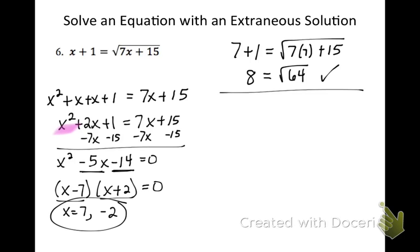Whenever I plug negative 2 in, I get negative 2 plus 1 equals the square root of 7 times negative 2 plus 15. So the problem here is this negative 2 plus 1. The reason is is because negative 2 plus 1 is negative 1 equals 7 times negative 2 is negative 14, plus 15 would give me a positive 1.